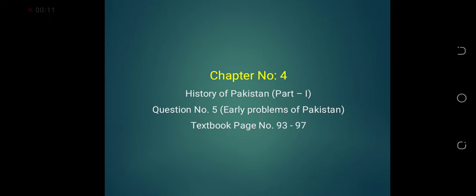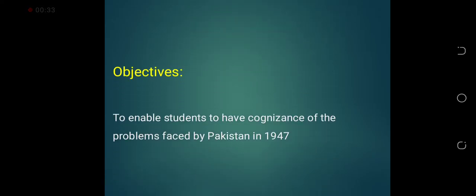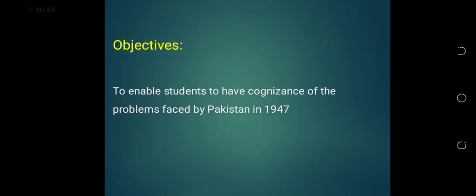Today we are going to take up chapter number four, which is about the history of Pakistan. It is part one of the history of Pakistan. Part two is going to be studied in class 10. From this chapter, we are going to take up question number five, which is about the early problems of Pakistan. The contents of this topic are available from page 93 to 97 of your textbook. The basic objective of this discussion is to let you have an awareness about the early problems faced by Pakistan in 1947 when it came into being.